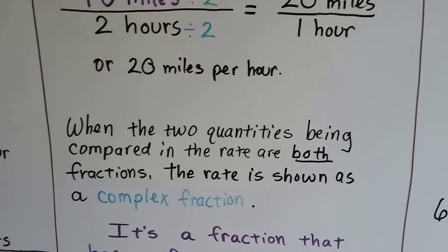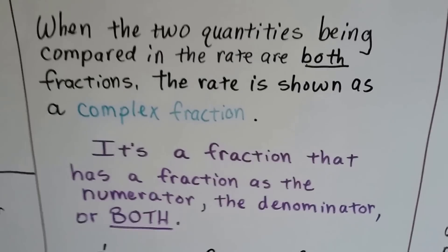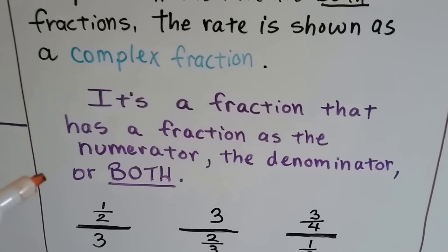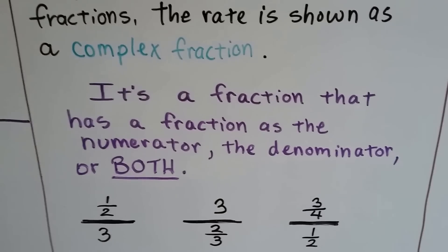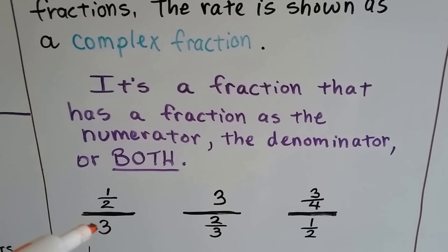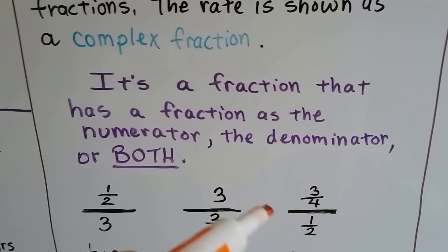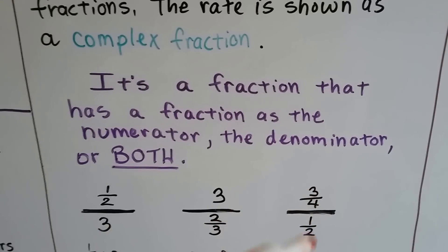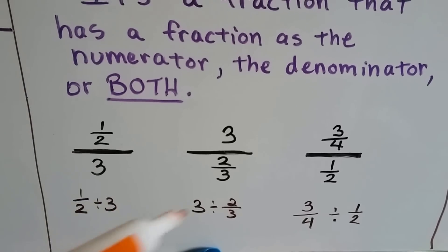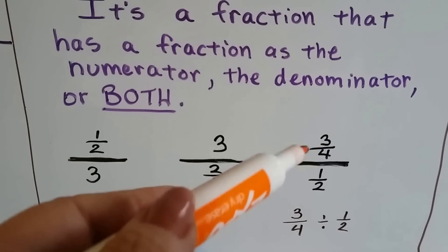When the two quantities being compared in the rate are both fractions, the rate is shown as a complex fraction — a fraction that has a fraction as a numerator, the denominator, or both. So we might have one-half over three, or three over two-thirds, or three-fourths over one-half. It's a fraction of a fraction. All it means is one-half divided by one-third, or three divided by two-thirds, or three-fourths divided by one-half.